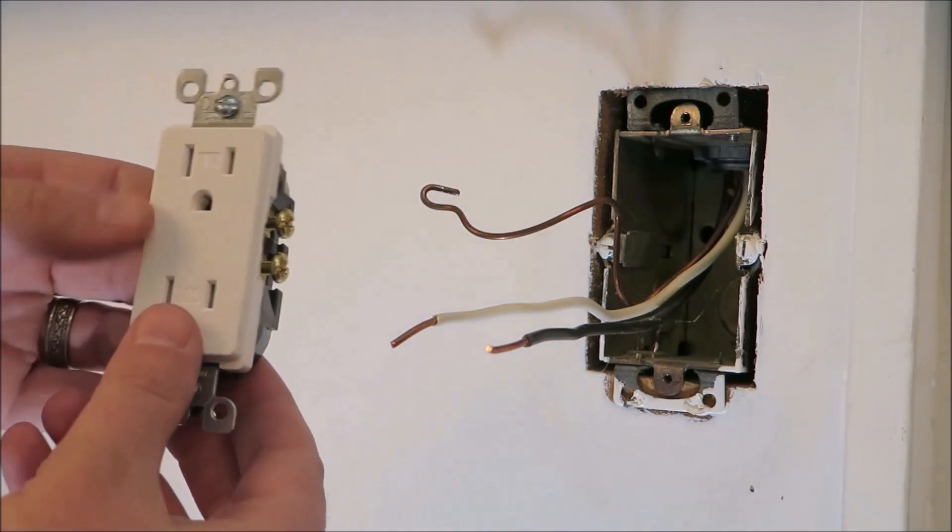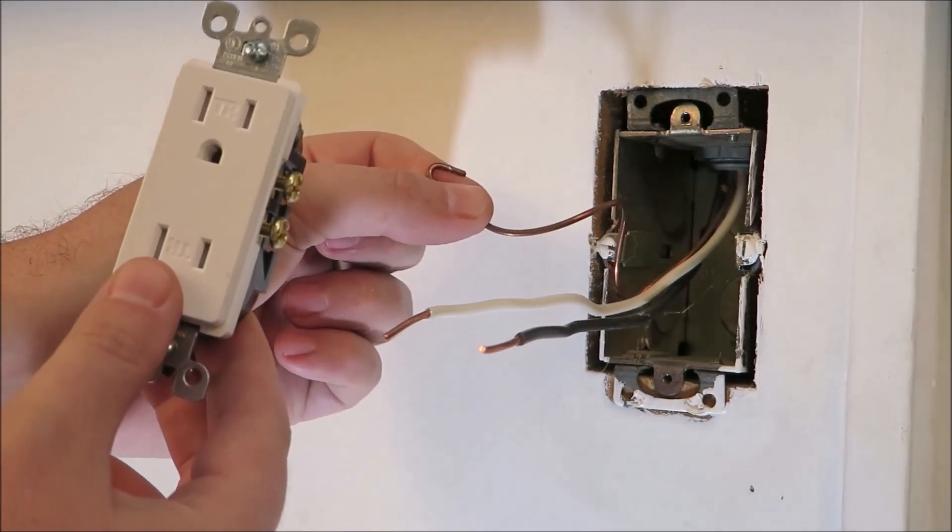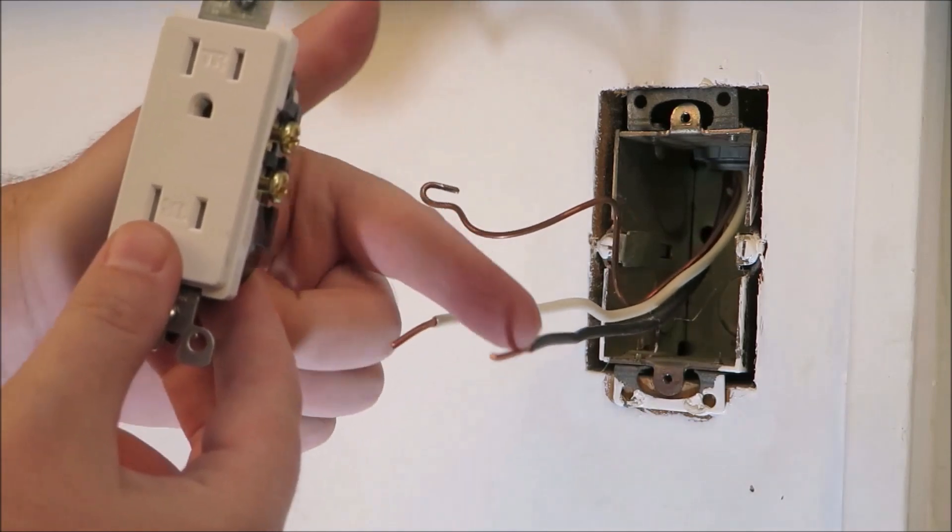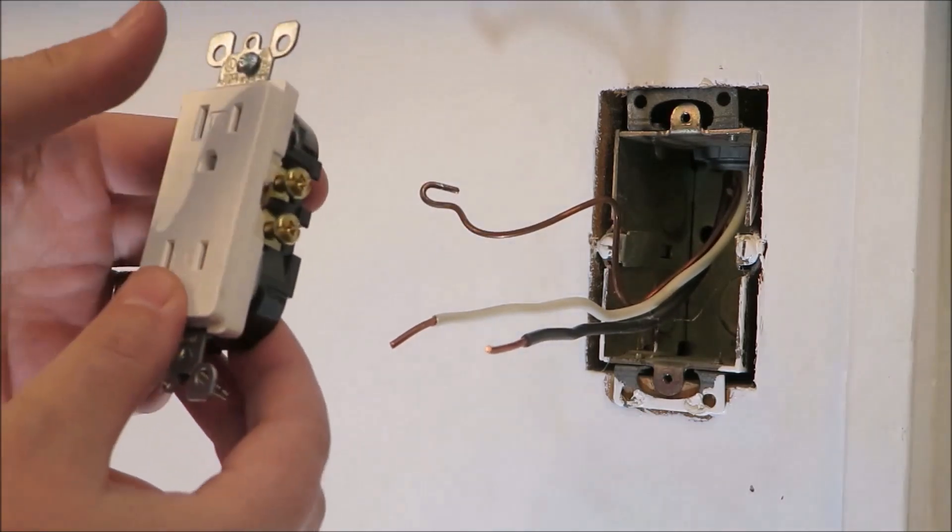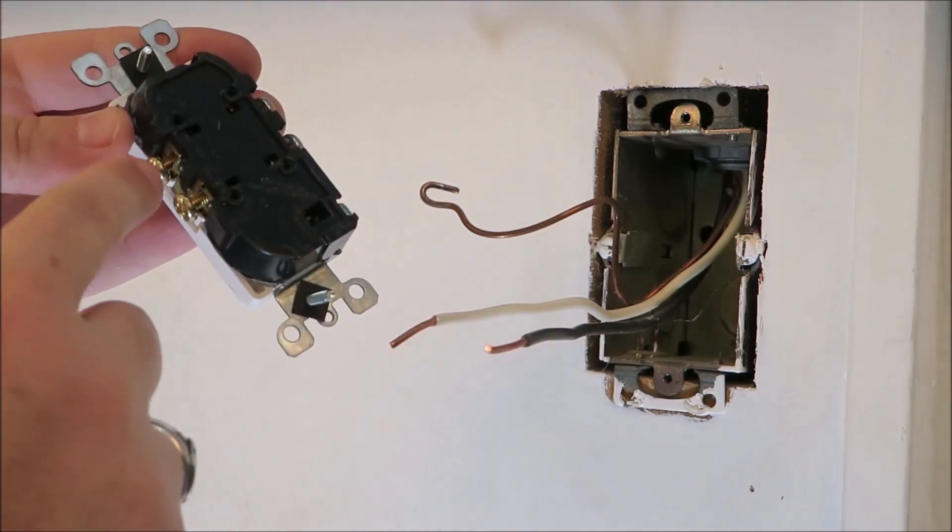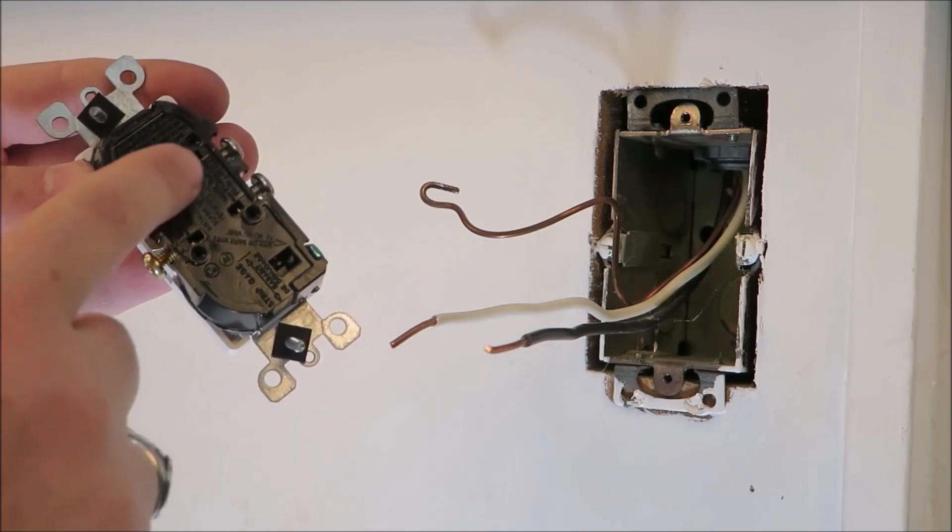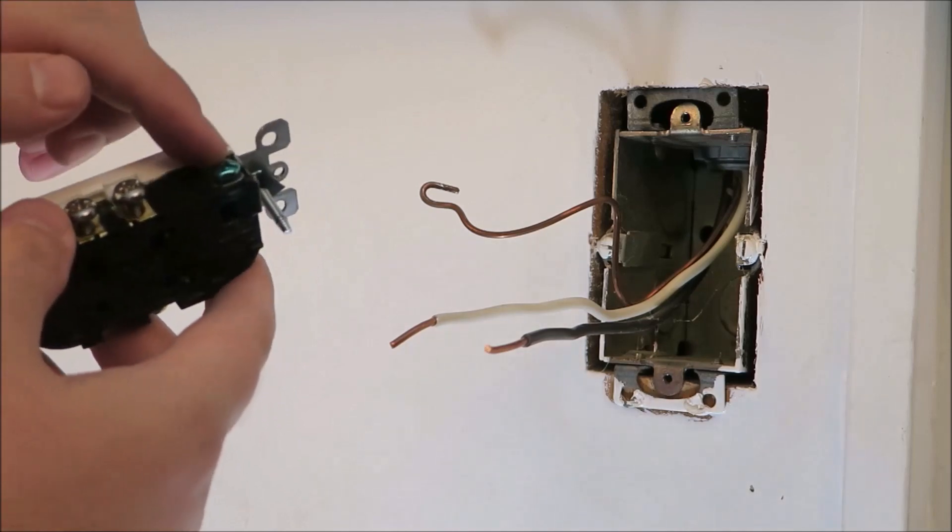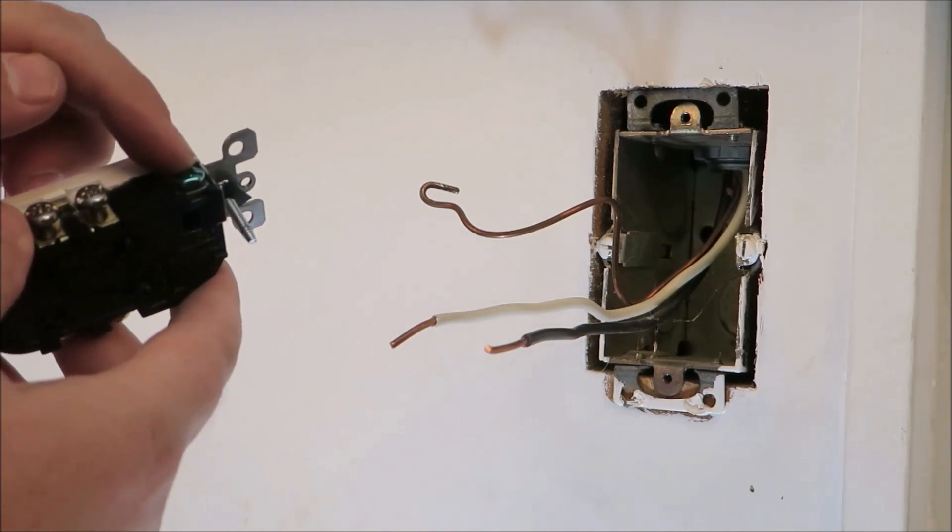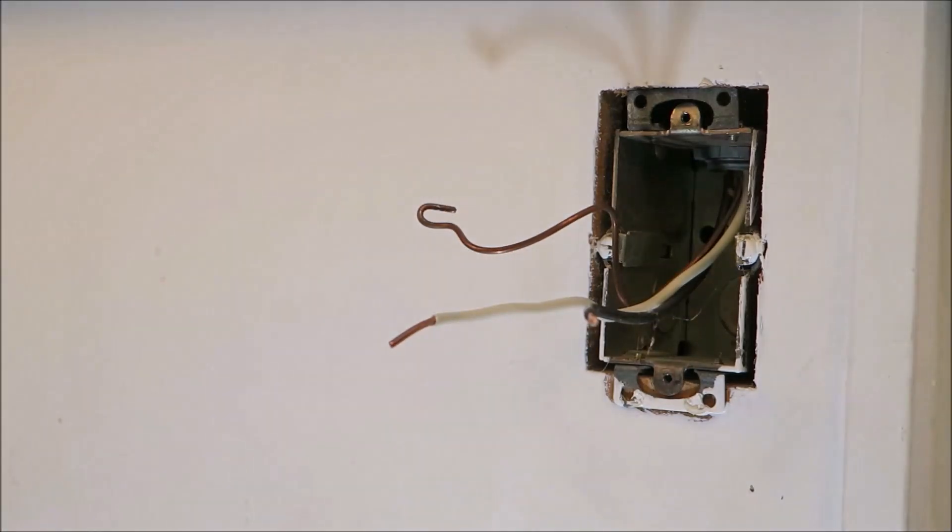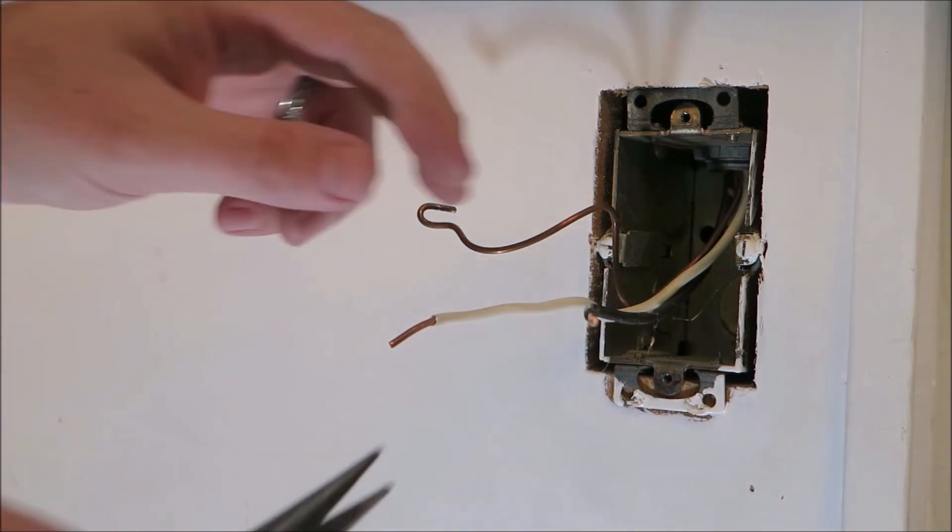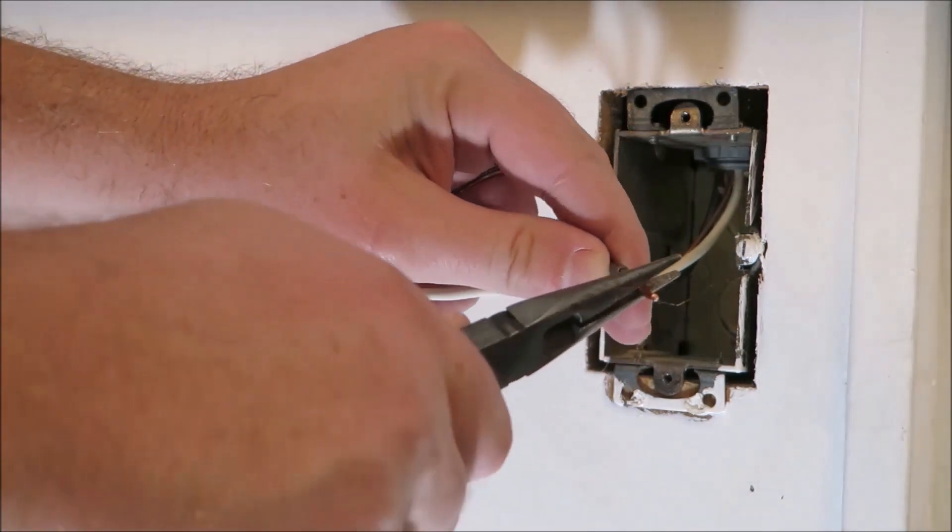So with this new outlet, we're going to have to make loops just like you see here on the ground wire on these other two wires so we can attach it to it. The nice thing about it back here is it indicates which goes to which. This shows that this is the hot, this is the neutral, and the green is your ground. So let's go ahead and use our pliers and make the loop right into the wire.